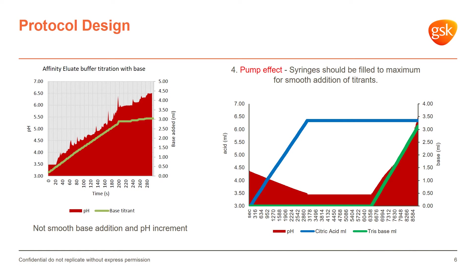Moving further into protocol design, the next step was to do a test run using the affinity elution buffer. On the left-hand side you can see the base titrant addition rate and the pH response is really choppy, which was not acceptable for the study we were planning. Hence we went into some problem-solving.